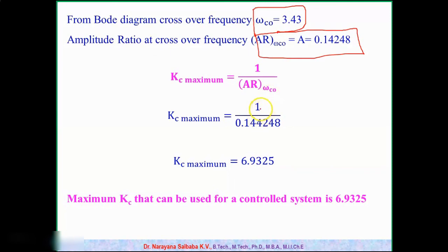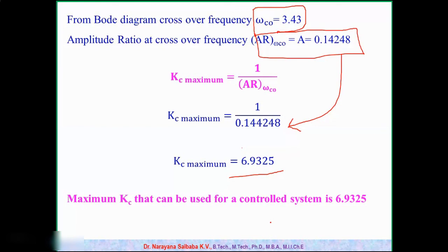To find the maximum value of kc, use the formula: kc_max = 1 / AR at the crossover frequency. Substituting AR = 0.14248: kc_max = 1 / 0.14248 = 6.9325. So the maximum value of kc for the given control system is 6.9325. The steps are: find the crossover frequency, find the corresponding AR, then apply kc_max = 1/AR. This formula applies to any system.